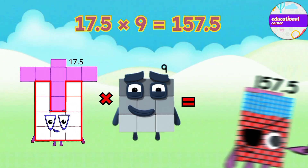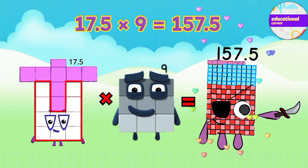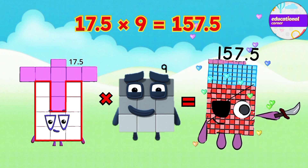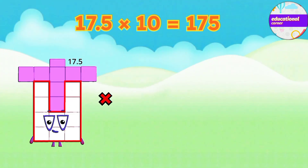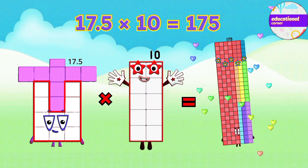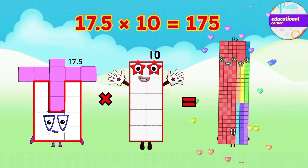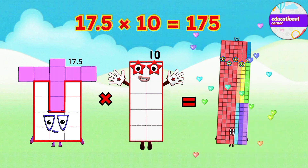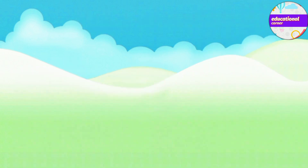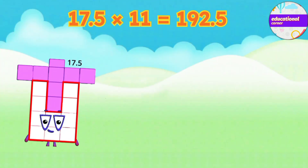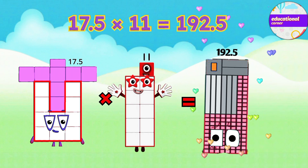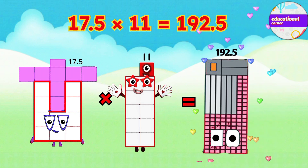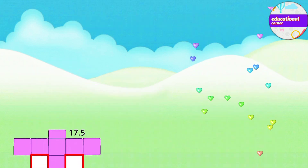17.5 multiplied by 9 equals 157.5. 17.5 multiplied by 10 equals 175. 17.5 multiplied by 11 equals 192.5.